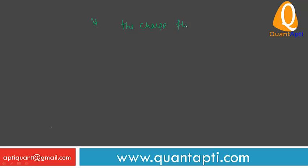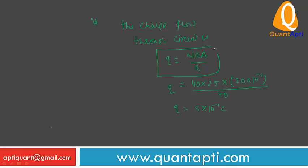Then we can say that the charge flow through circuit is given by Q is equal to NBA upon R. So N is 40, B is 2.5, A is 2.0 into 10 raise to power minus 4, upon 40. So the answer will be 5 into 10 raise to power minus 4 coulomb.